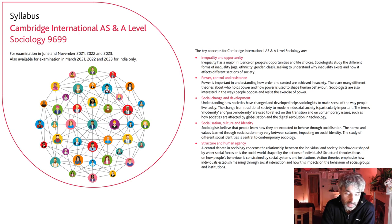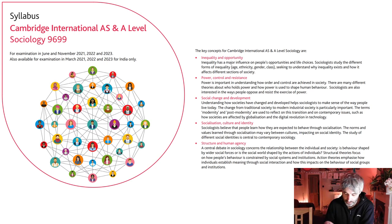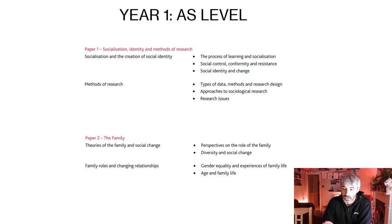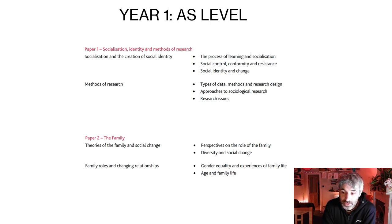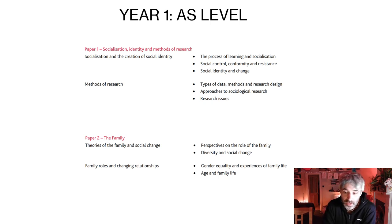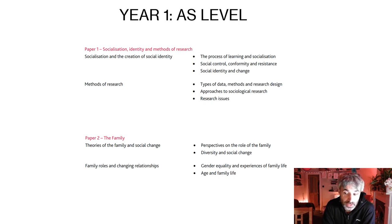We'll also look at the abstract distinction between structure and human agency — which is really what motivates our behaviour. Do we have the power to motivate our behaviour or are we motivated by other forces? The course is split up into two years and in each year there are two papers. The first paper is all about these questions of socialisation and identity. It's also about methods of research — how do we do sociological research and what kind of methods do we use to get our data?